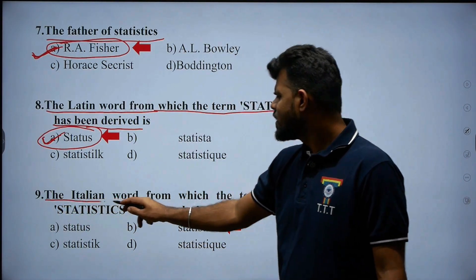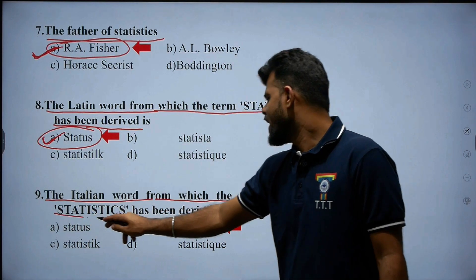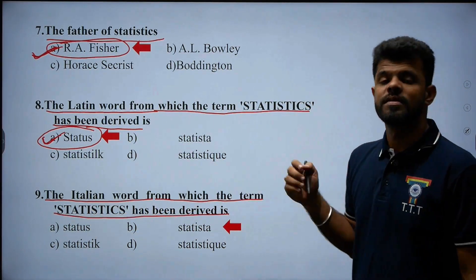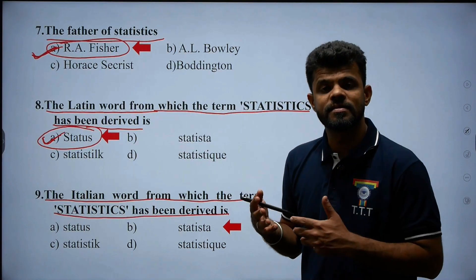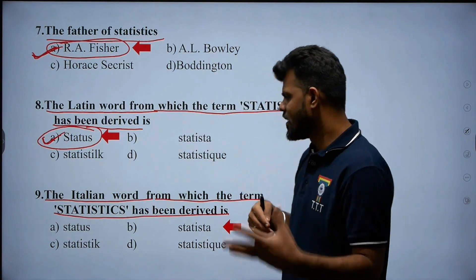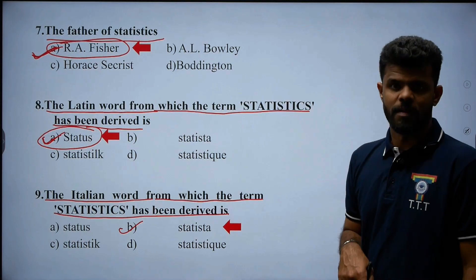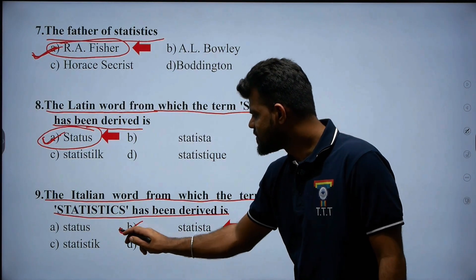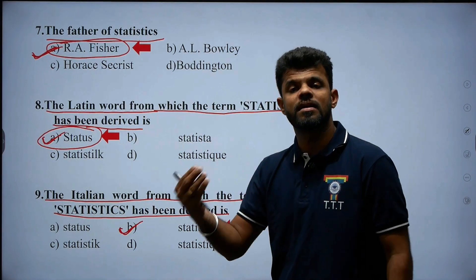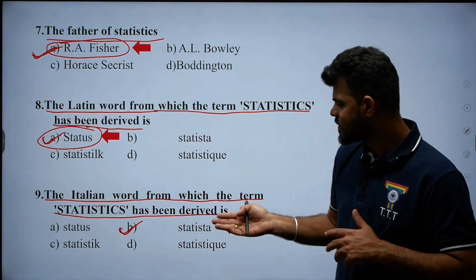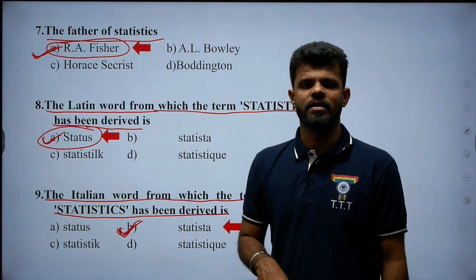Next, question number nine: the Italian word from which the term statistics has been derived. Statistics is derived from the Italian word 'statista.' Therefore, option B — statista — is the right answer.